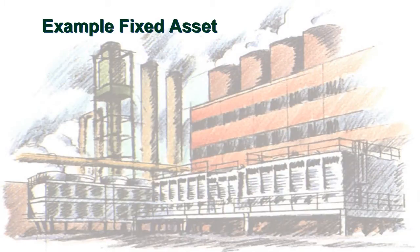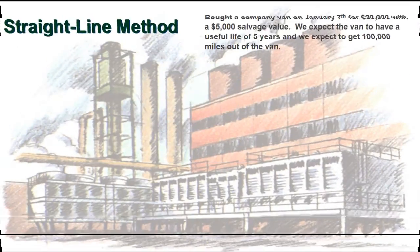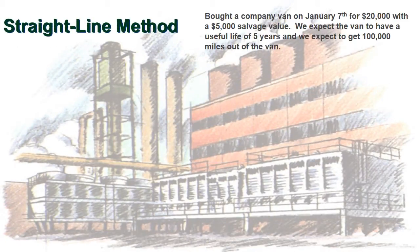Here's the example we're going to follow — the exact same example used three times. We bought a company van on January 7th for $20,000 with a $5,000 salvage value. We're not going to deal with mid-year or partial months; we'll use a full 12-month year every year. We expect the van to have a useful life of five years and we expect to get 100,000 miles out of it. We are starting with the straight-line method.